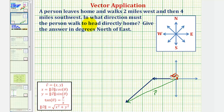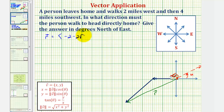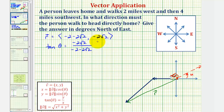For the second part, we want to determine what direction the person must walk to head directly home. Looking at the resultant vector on the coordinate plane, if the person wants to walk directly home, they would walk in the opposite direction. We're looking for angle alpha — the number of degrees north of east. Since tangent theta equals y divided by x, we get tangent theta equals negative two square root two divided by the quantity negative two minus two square root two, so theta equals the inverse tangent of that ratio.